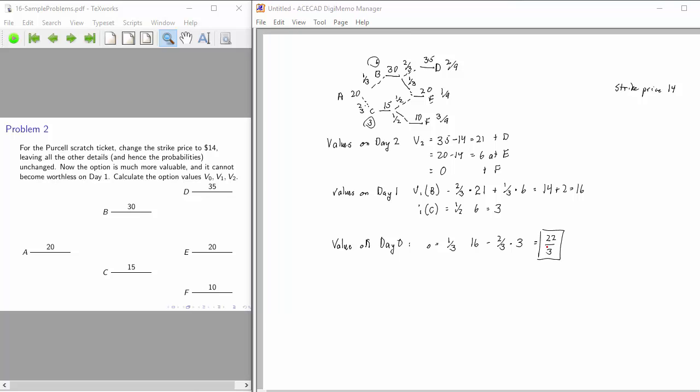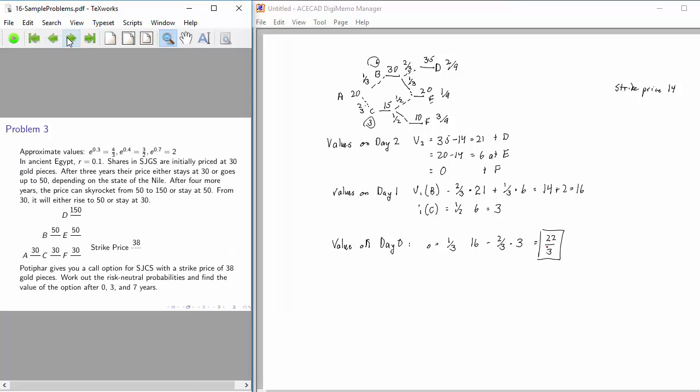Now we're going to complicate the situation by introducing a non-zero interest rate. I wanted to exploit the fact that e to the 0.7 is very nearly 2 and that factor of 2 is pretty much 4 thirds over the first three years and 3 halves over the second four years. So, I was trying to think of something that involved 7 years and I turned to the Bible. This story was made famous by Andrew Lloyd Webber in his Broadway musical, Joseph and the Amazing Technicolor Dreamcoat. With that in mind, I've invented a mythical corporation called Sons of Jacob Grain Storage.